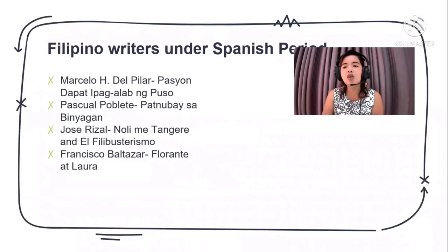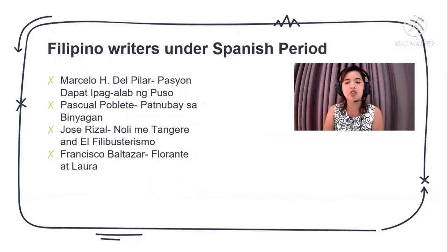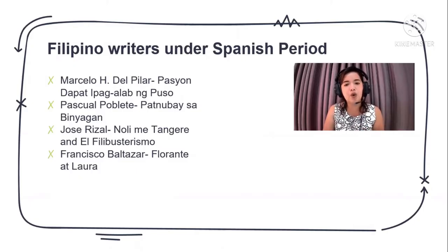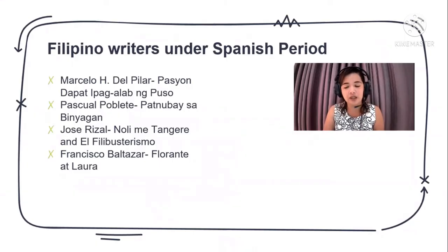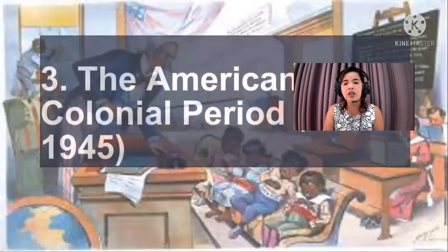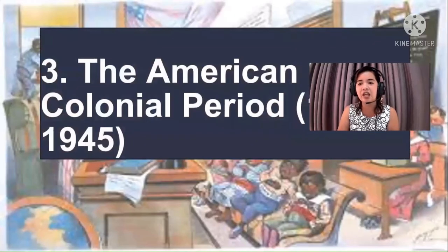Filipino writers under the Spanish period included many of our national heroes. Marcelo del Pilar, Jose Rizal, Pascual Poblete, and Francisco Baltazar all tried to write not just for leisure but to awaken the spirit of the Filipinos and to fight for their freedom.